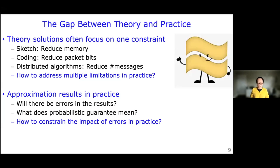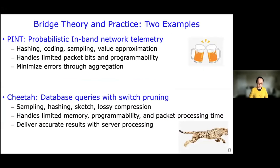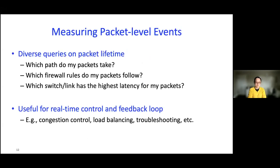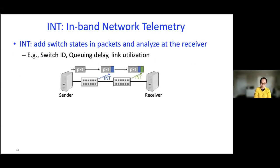In this talk I'll show two examples of how we bridge the gap between theory and practice. One example is on probabilistic in-band network telemetry; the other is on how to support database queries. In both examples I'll show how approximation algorithms are useful and how we address the limitations of approximation in practice. I'll start with probabilistic in-band network telemetry. The problem we're trying to solve is network telemetry: we want information about packet lifetime, like which path a packet takes, and which switch or link has the highest latency.